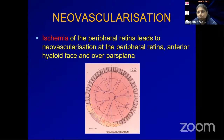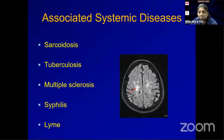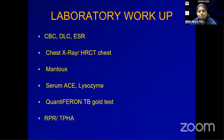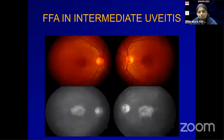Neovascularization results from ischemia of the peripheral retina. Pars planitis usually follows one of three courses: self-limited, smoldering, or recurrent. Associated systemic diseases include sarcoidosis, tuberculosis, multiple sclerosis, syphilis, and Lyme disease. Differentials include masquerade syndrome, toxocariasis, Eales disease, and amyloidosis. Laboratory workup includes CBC, chest X-ray or HRCT chest, Mantoux/QuantiFERON TB Gold, serum ACE, RPR, and TPHA. Other investigations: FFA, OCT, and UBM.